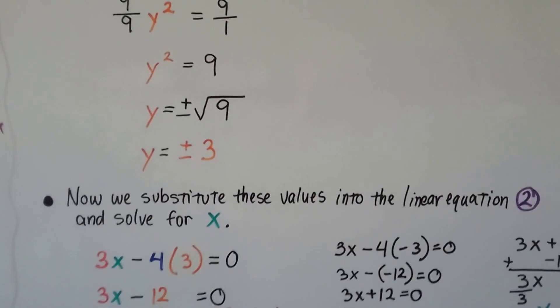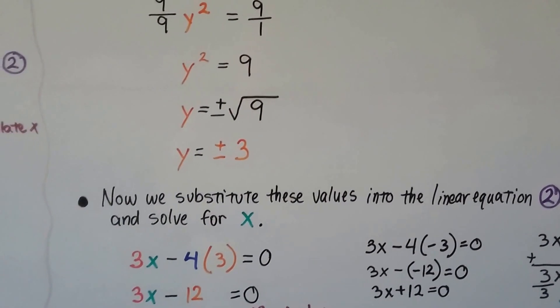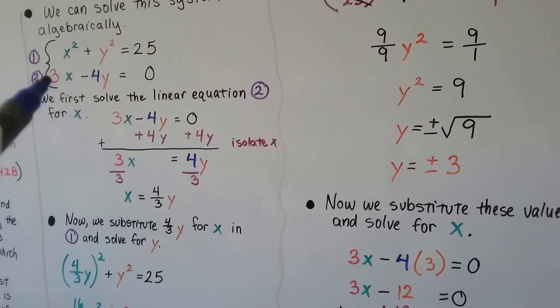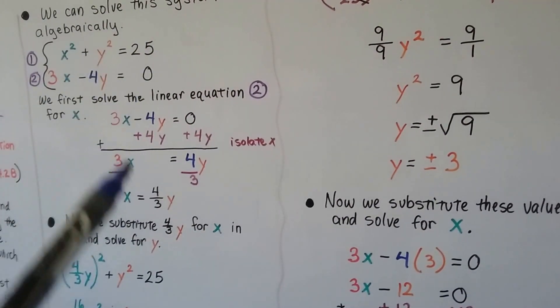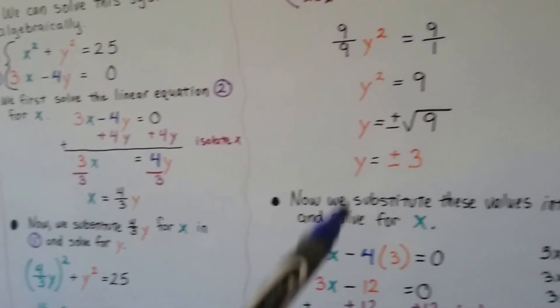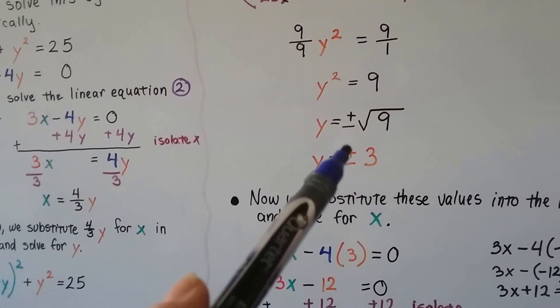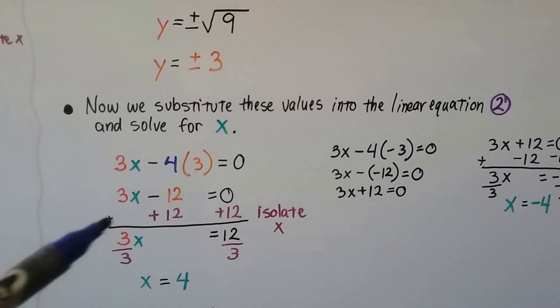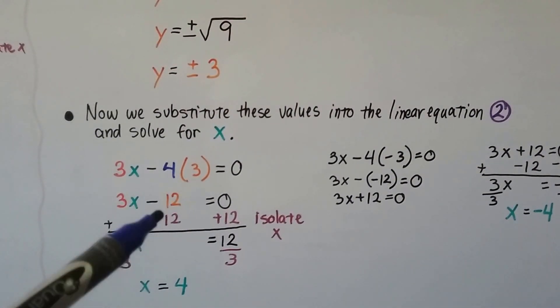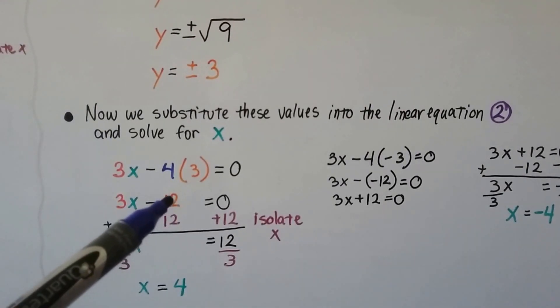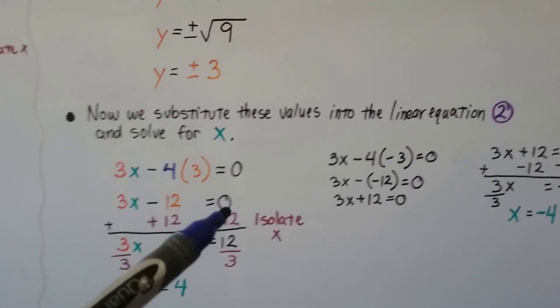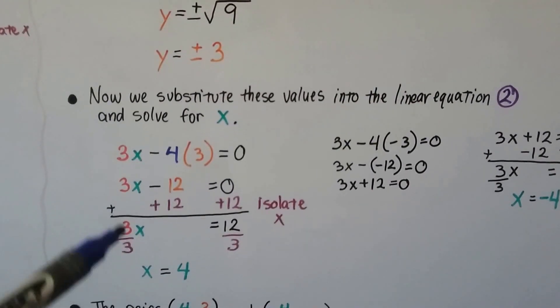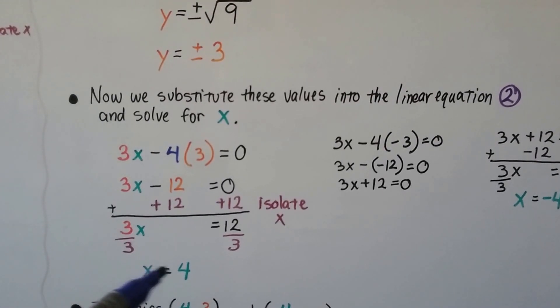Now we substitute these values into the linear equation number 2. We've got 3x - 4y = 0 and x = 4/3 y. Now we've got y = ±3. If it's a plus 3, then we get minus 12, equals 0. We can add 12 to each side of this equation to isolate x. Divide by this coefficient, we get x = 4.